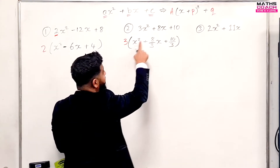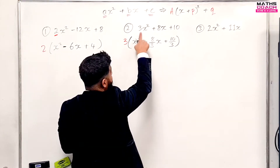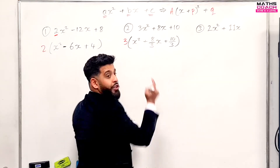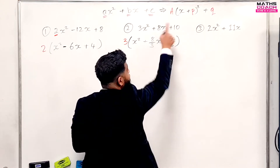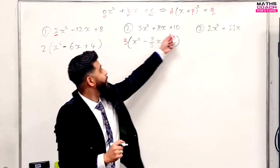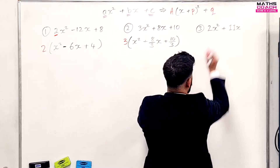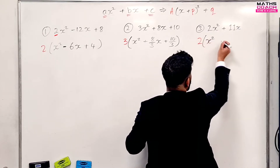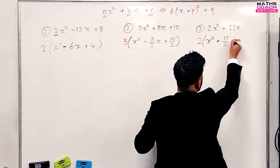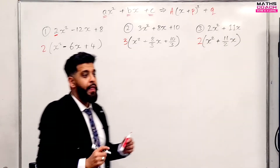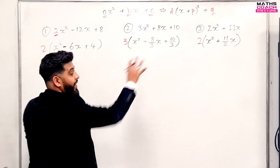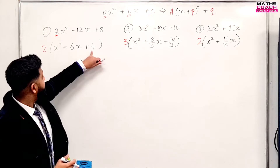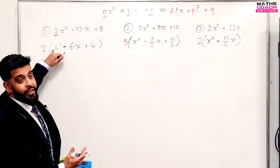Notice what happens when you multiply this out: this gives you 3 times x squared, which is 3x squared. And the 3 will cancel with 8 over 3, just giving you 8. The 3 will cancel the 10 over 3, just giving you 10. So you still end up with what you want. Now for the last one, we're taking out the 2. So we'll have 2 bracket x squared plus 11 over 2 times x. All we've done is factorized out that integer in front of x squared, so that we have a quadratic with just a 1.